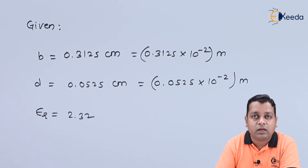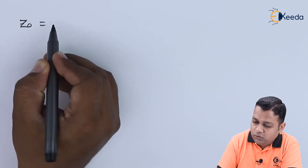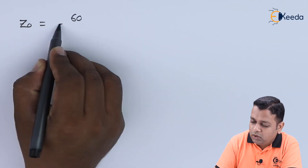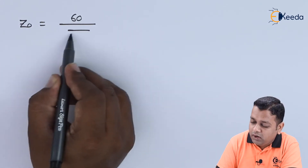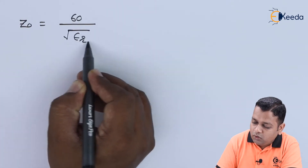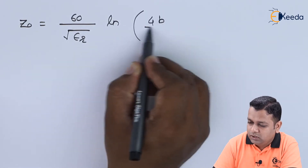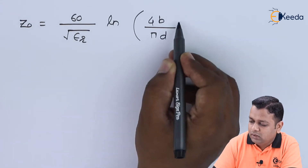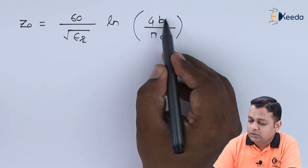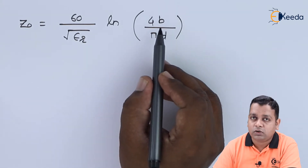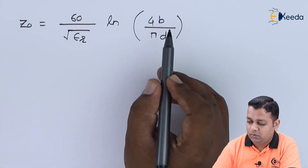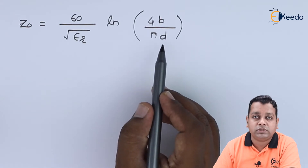We first require the calculation for characteristic impedance. The characteristic impedance Z0 for this type of transmission line is given by: Z0 = 60 / √εr × ln(4b / πd), where b is the distance of separation between the ground planes — the height of the strip line material — and d is the diameter of the central conductor.